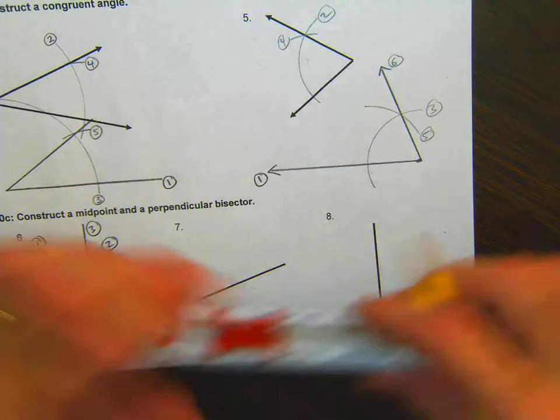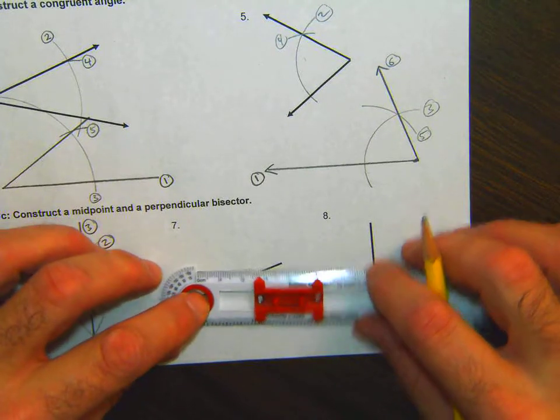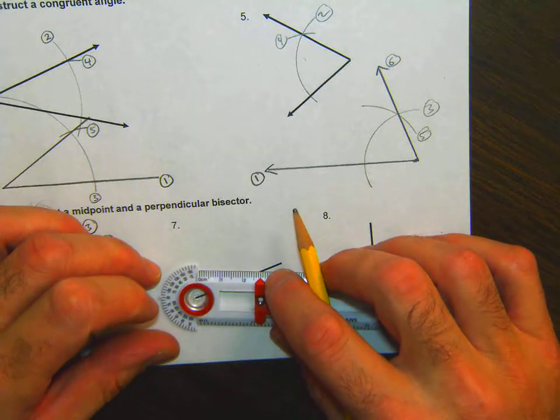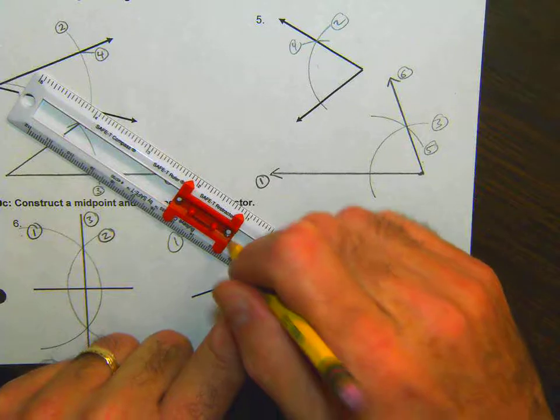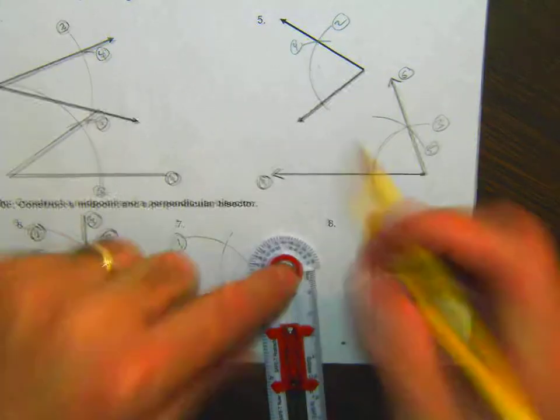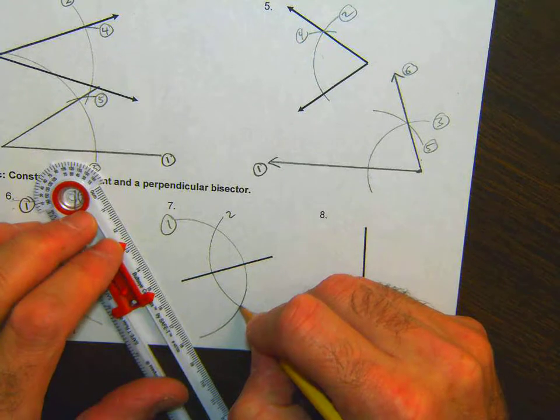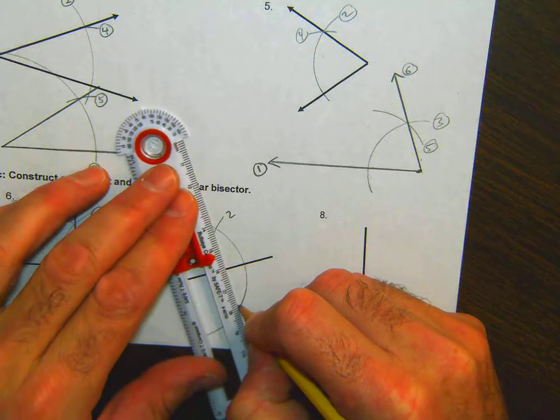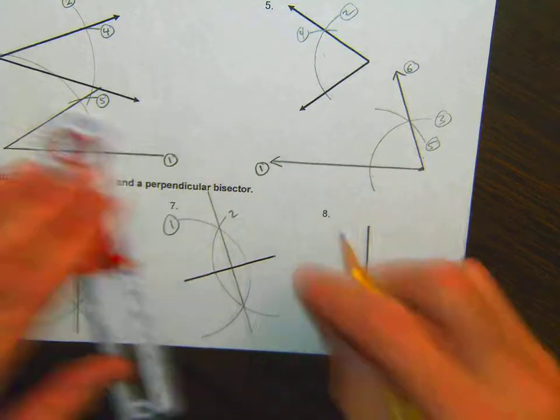Perpendicular bisector to this. Do the same thing. Look across as two. Connect the intersections. I have my perpendicular bisector.